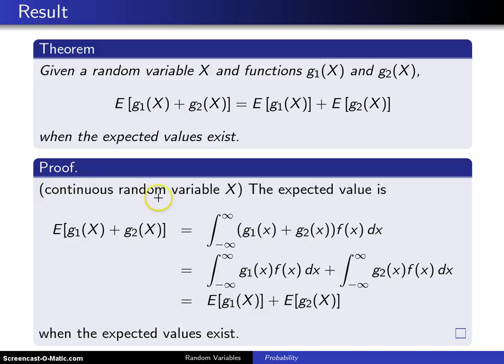Again, the proof will be in the continuous case only. In the discrete case, integrals are replaced by summations. The expected value is E of g1 of X plus g2 of X.